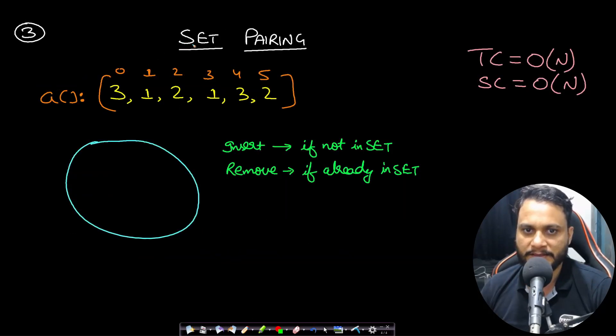Let's look at the third approach which is by using set pairing and unpairing. Given the array 3, 1, 2, 1, 3, 2, the idea is we will be iterating through the entire array and whenever I see an item I will check if it is present in the set or not. If it is not present, I will insert it into the set and move on. One is not present, insert it. Two is not present, insert it into the set.